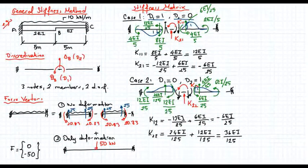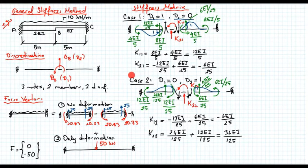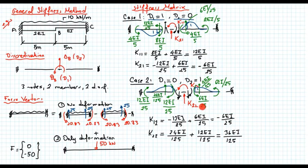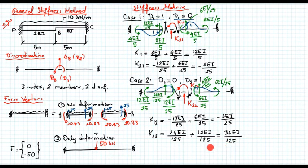Let's check if we calculated these coefficients accurately by verifying the stiffness matrix properties. The off-diagonals must be equal: K21 must equal K12. Yes — both are 6EI/25. The other property is that all diagonal elements must be positive. Both diagonal values are positive, and all individual member contributions are positive as well. So what we are doing looks correct.